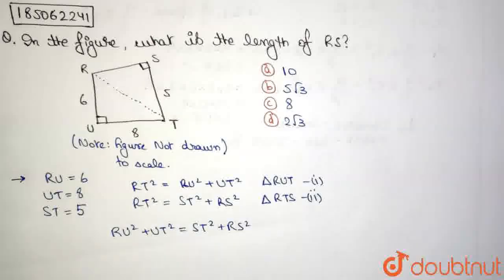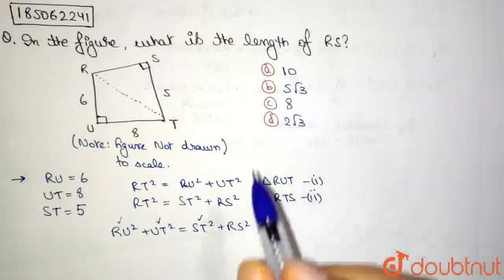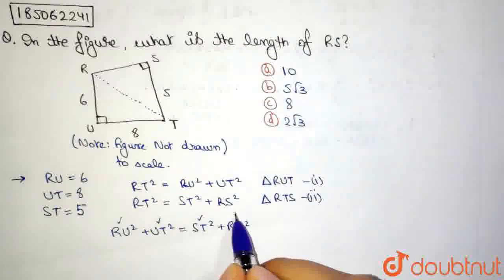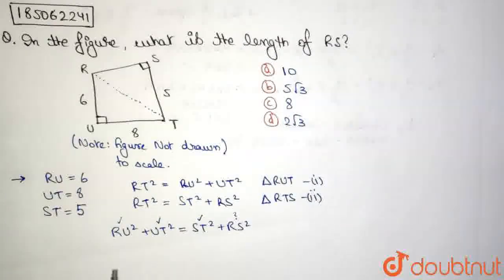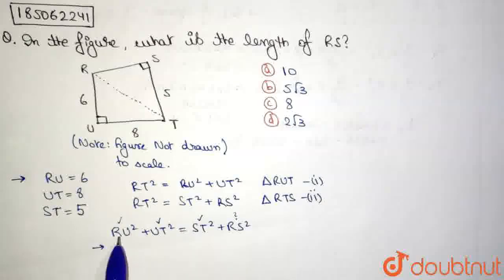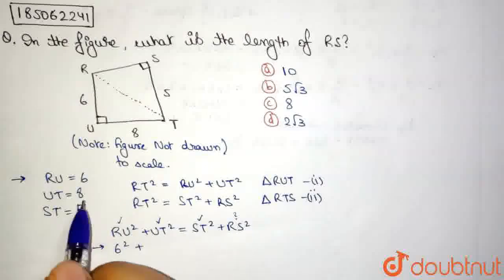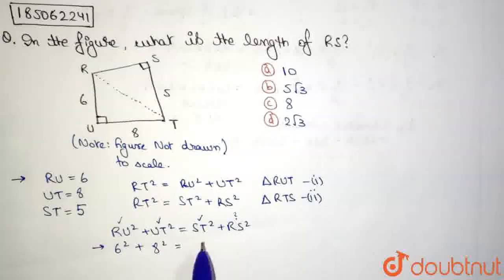Now, we have the value of RU, we have the value of UT, and we have the value of ST. And we need to find out the value of RS as was given to us in the question. What is the length of RS? So if we substitute each of these values, we can say that RU is 6, so 6 square plus UT is 8, plus 8 square is equal to ST is 5, 5 square plus RS square.